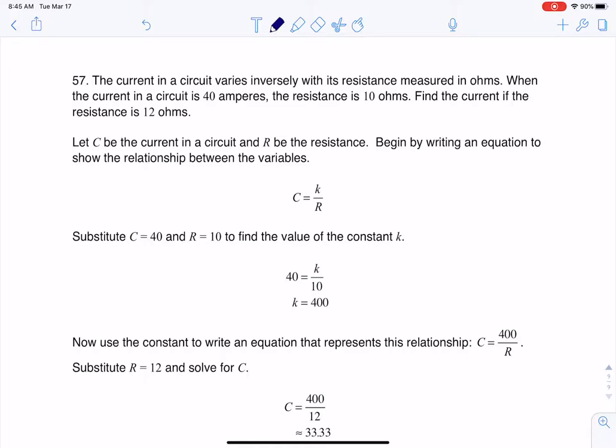Okay, so I'm hoping words that stand out to you are what varies inversely. And then I see something about current and resistance. I also see a complete set of information - here's my current of 40 amps and my resistance of 10 ohms. So there's my ordered pair, and then I'm given half of an ordered pair. I'm given a resistance and asked to find a current.